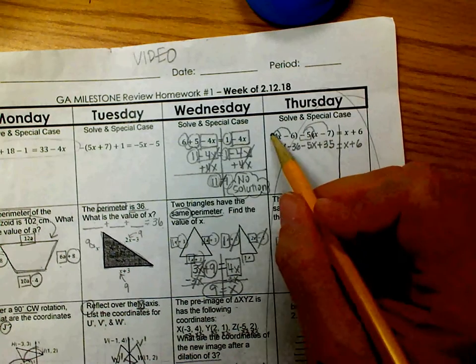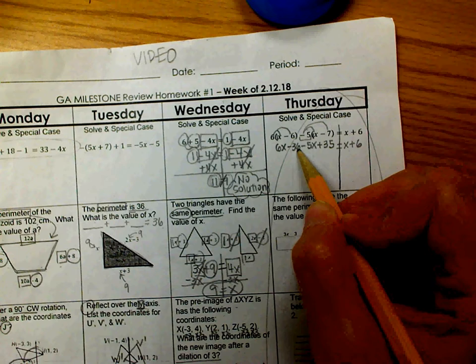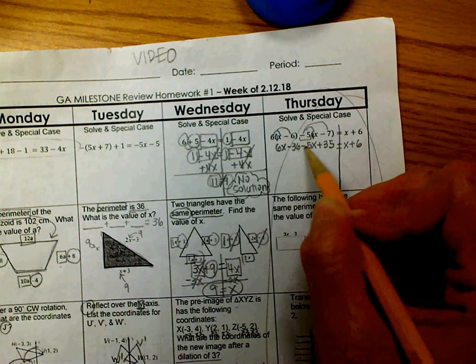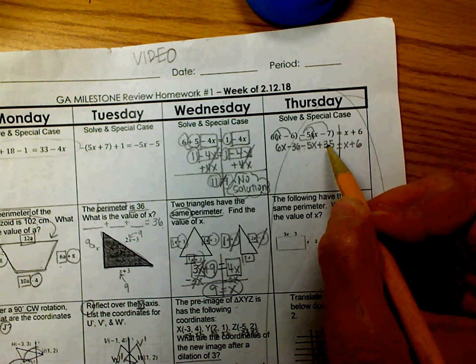Okay, now how did I get that? 6 times 1 here is 6. 6 times negative 6 is negative 36. Negative 5 times 1 is a negative 5, but don't forget the x. Negative 5 times a negative 7 is a positive 35.